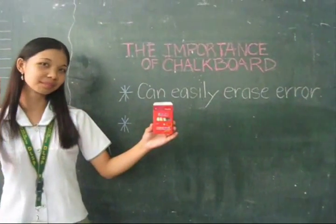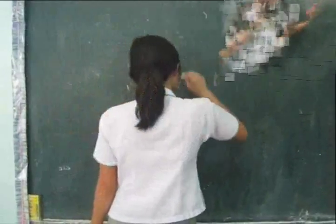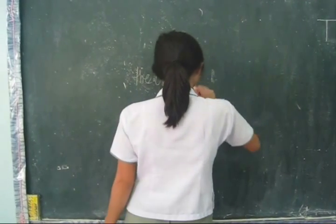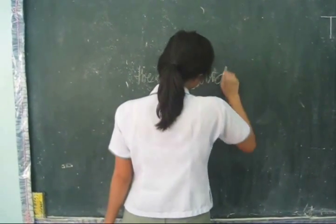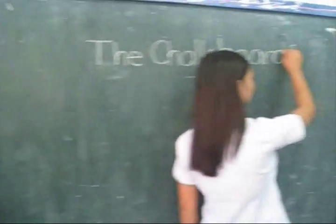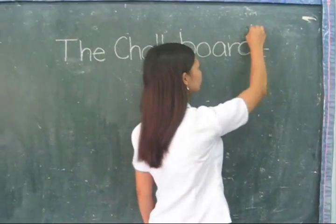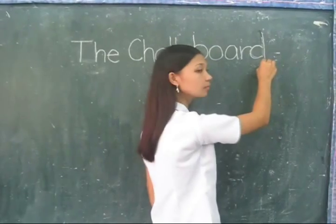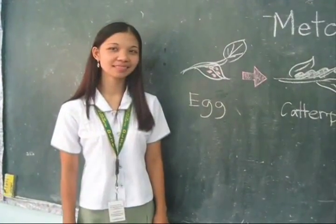Number five: Do not turn your back to your class while you write on the chalkboard. Write side view as you talk. Don't lose your eye contact with your class.